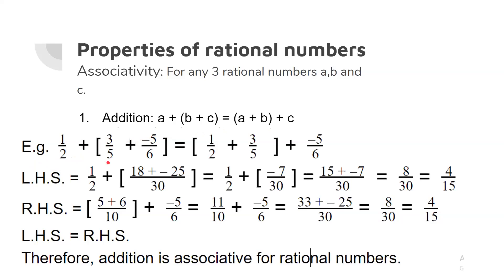That is: 1/2 plus (3/5 plus minus 5/6) is equal to (1/2 plus 3/5) plus minus 5/6. We will verify by calculating LHS and RHS separately. LHS is equal to 1/2 plus, then we have a bracket with two rational numbers with different denominators. 5 and 6, LCM is 30. So numerator becomes 18 plus minus 25, equal to 1/2 plus minus 7 upon 30. Again we have two fractions with different denominators. LHS is equal to 4 by 15.